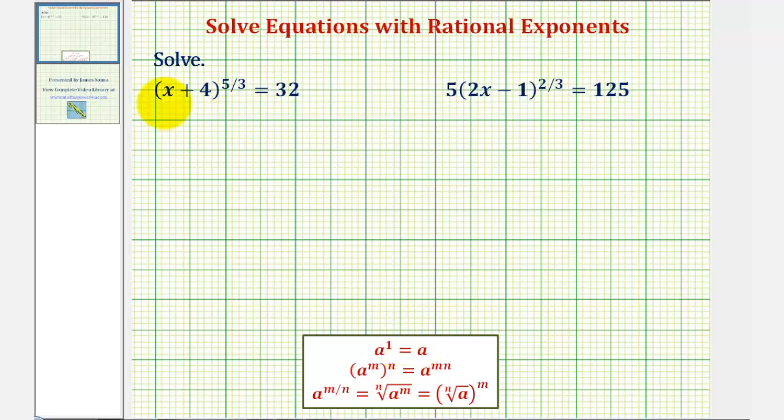So in this first equation here, if we had x plus 4 to the first power, that would just give us x plus 4 on the left. So what we're going to do is raise both sides of the equation to the reciprocal power of five-thirds, which would be three-fifths.